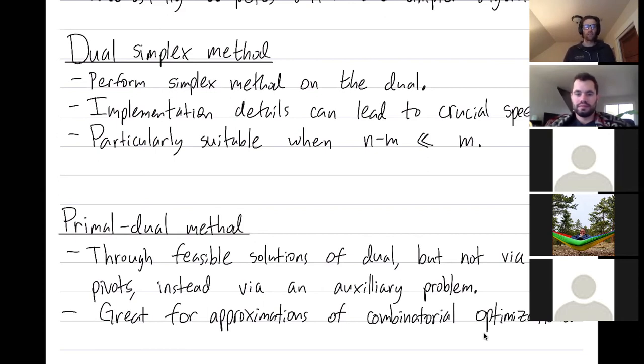Roughly speaking, the dual simplex method is just performing the simplex method on the dual linear programming problem. But there are some implementation details that can lead to crucial speed ups. And if you let m be the number of constraints, and if you let n be the number of variables, then the dual simplex method is particularly good when the number of additional variables beyond the number of constraints is very small compared to the number of constraints.